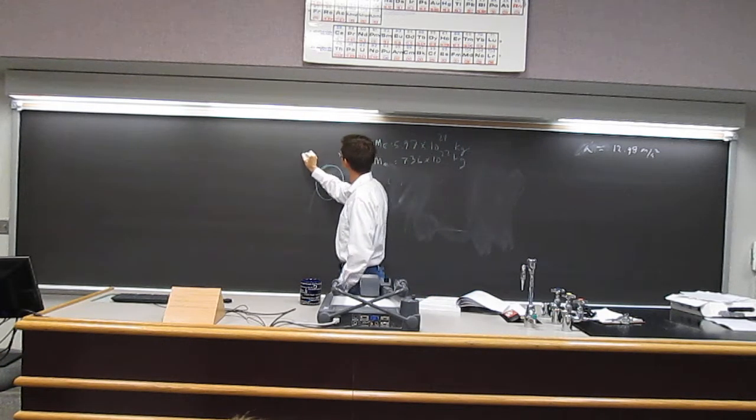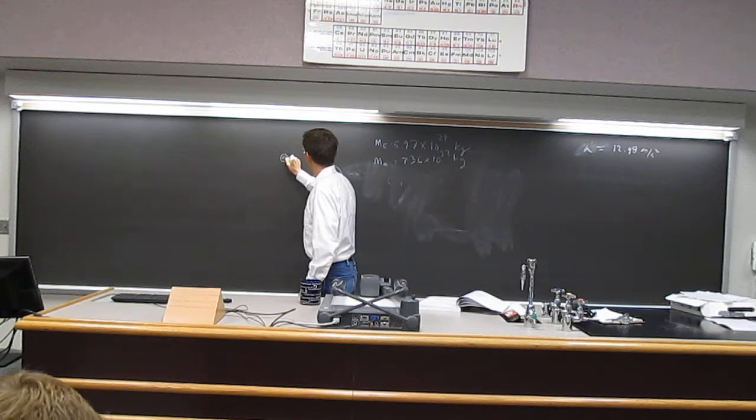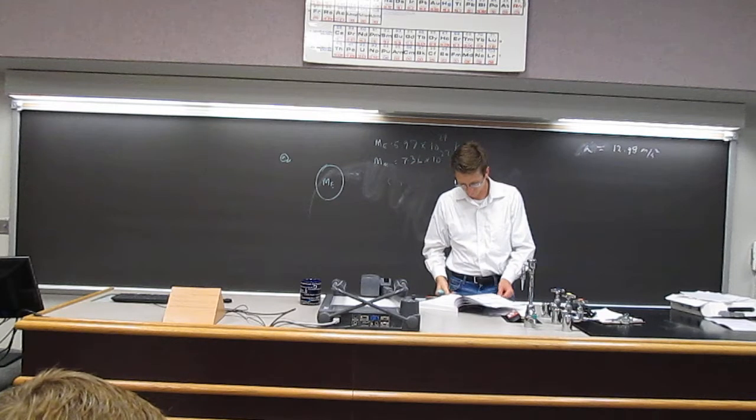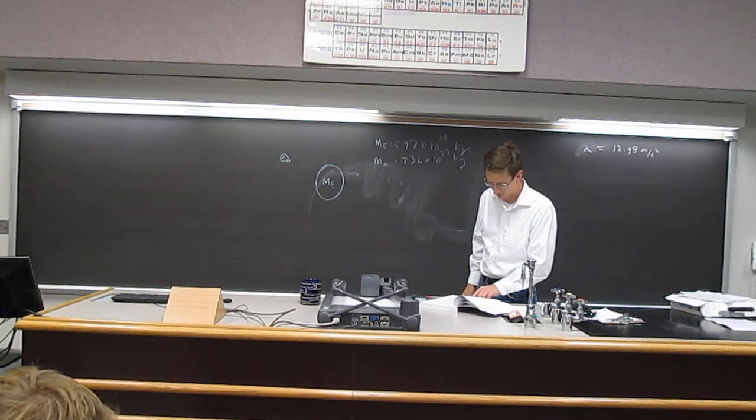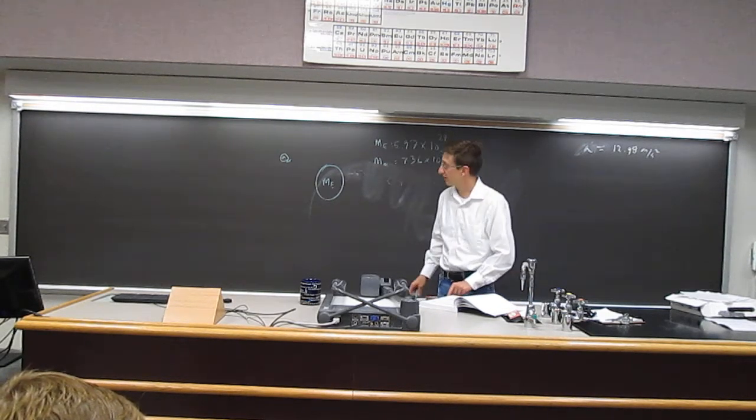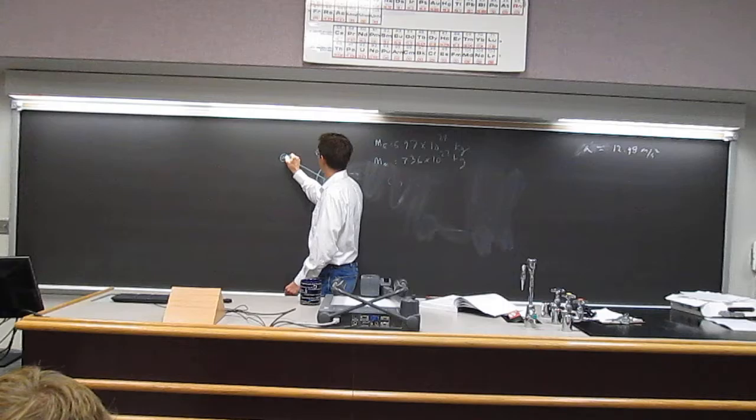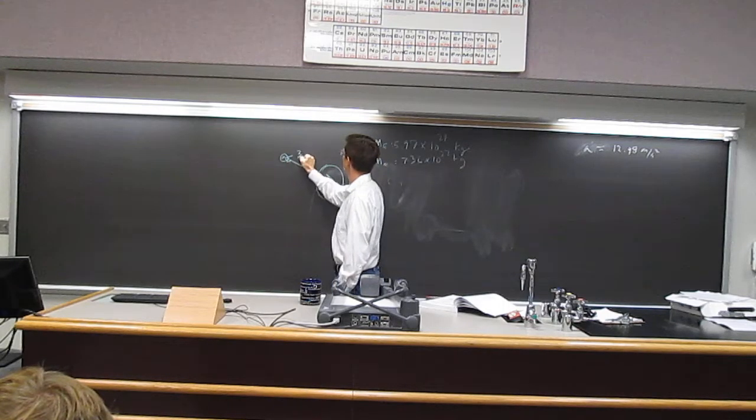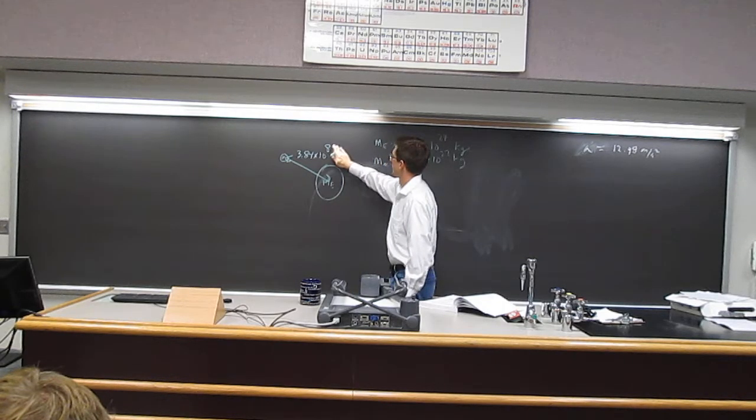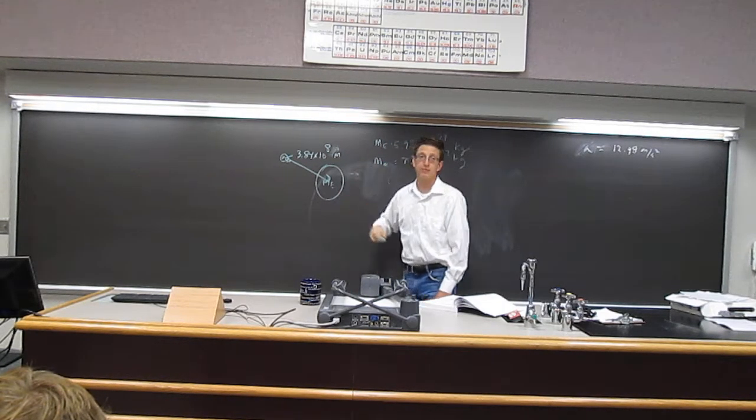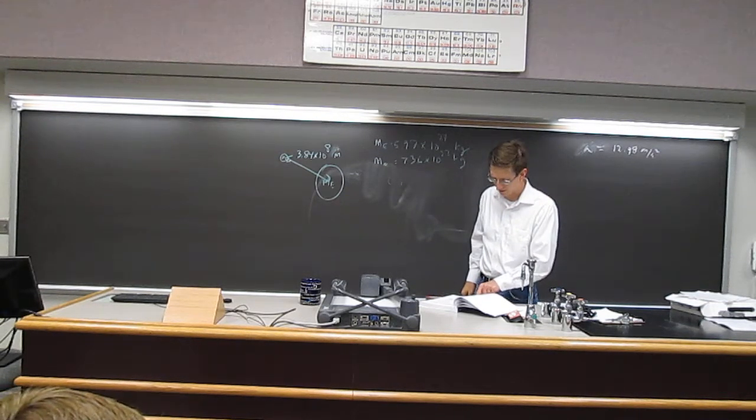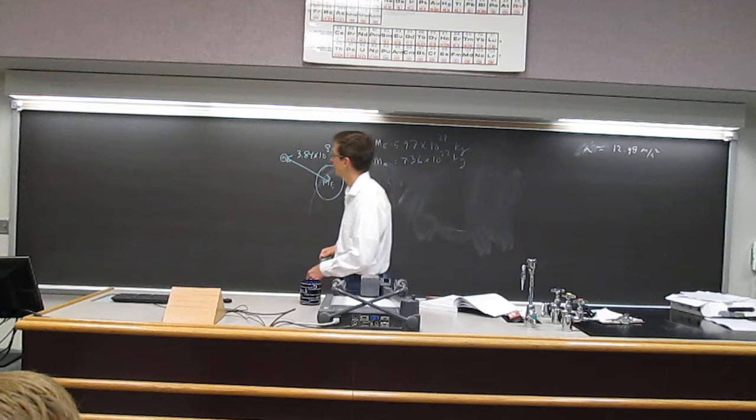So I have mass of the earth and I have the moon out here somewhere. And then it asks, the average distance between the center of the earth and the center of the moon is 3.84 times 10 to the 8 meters. So this distance is 3.84 times 10 to the 8 meters. What is the gravitational force acting on the moon due to the earth?